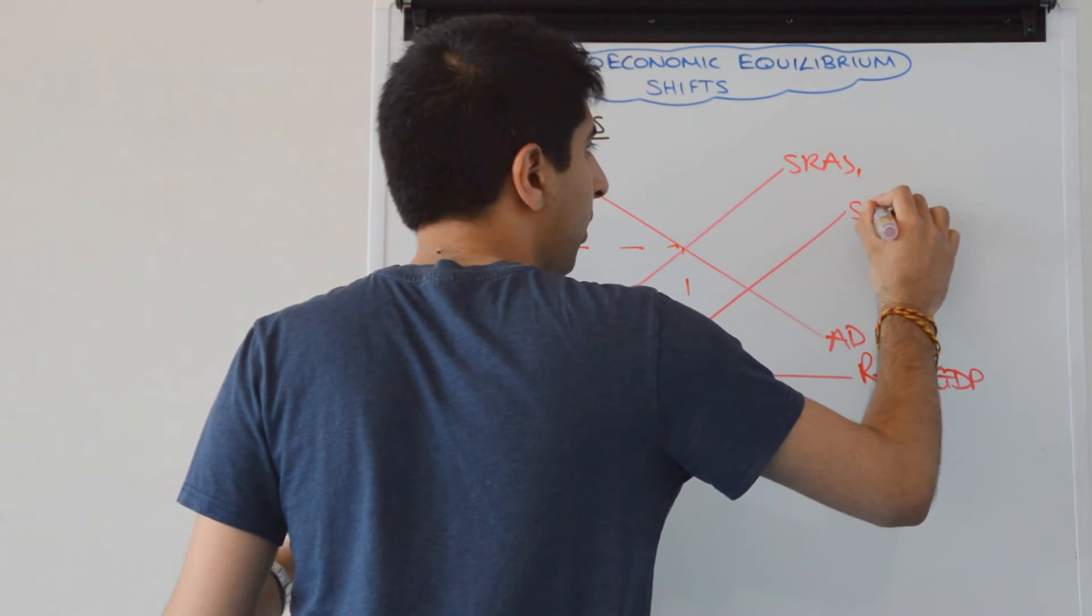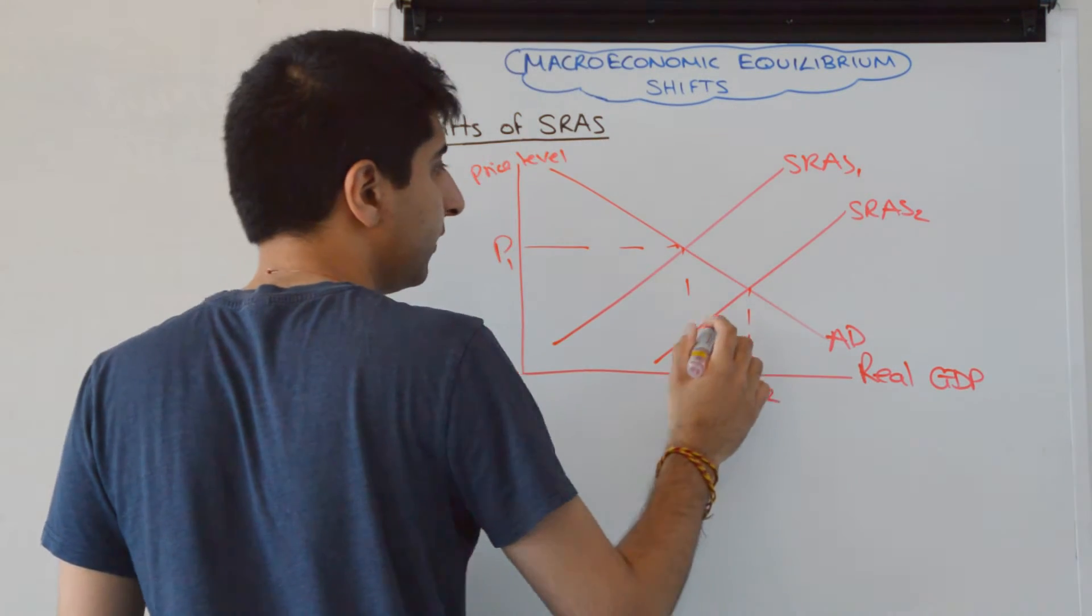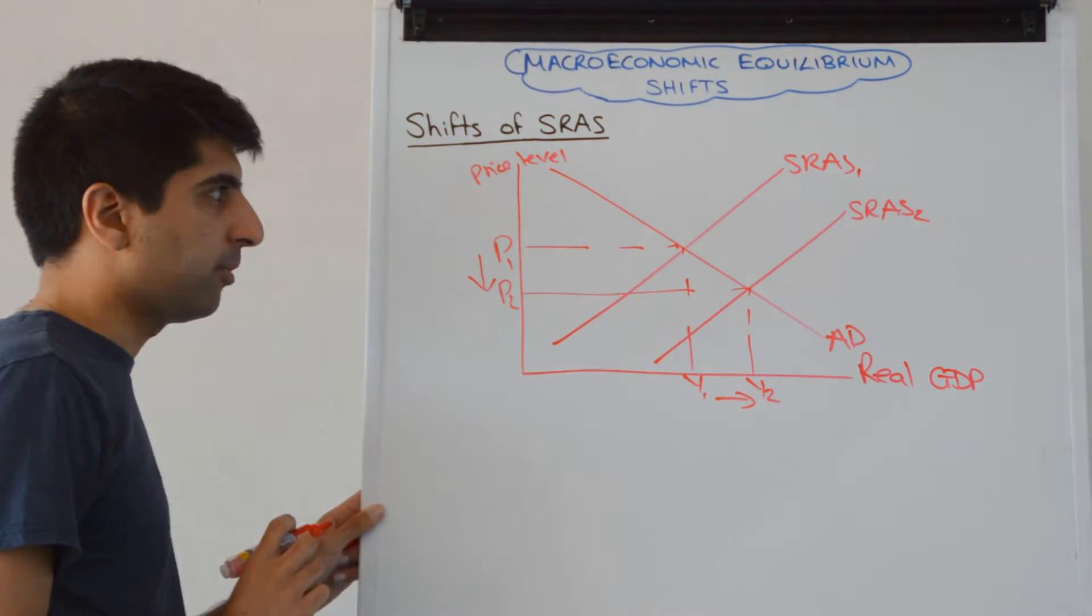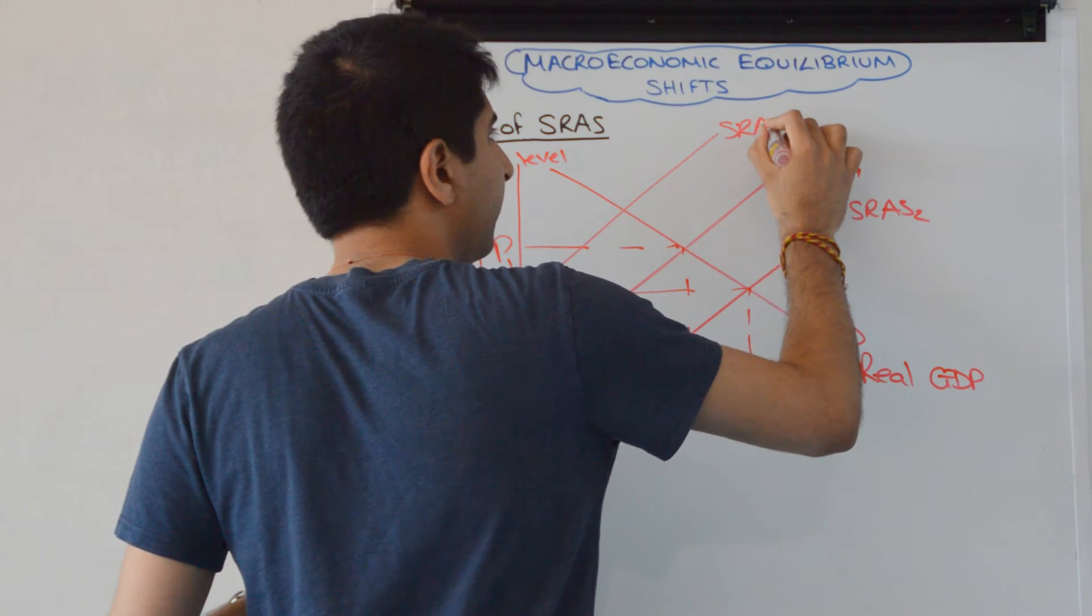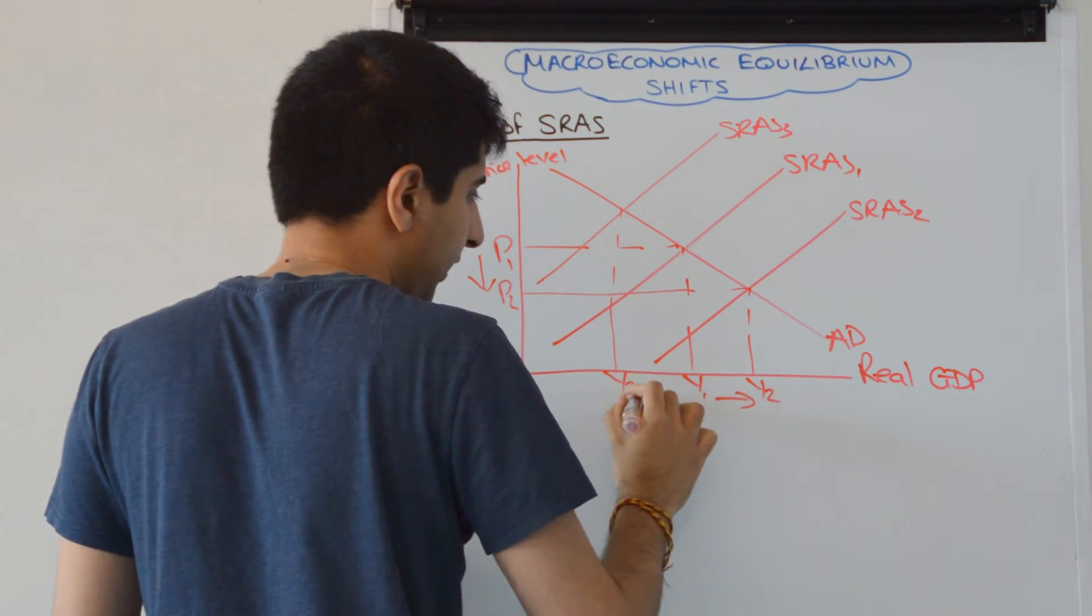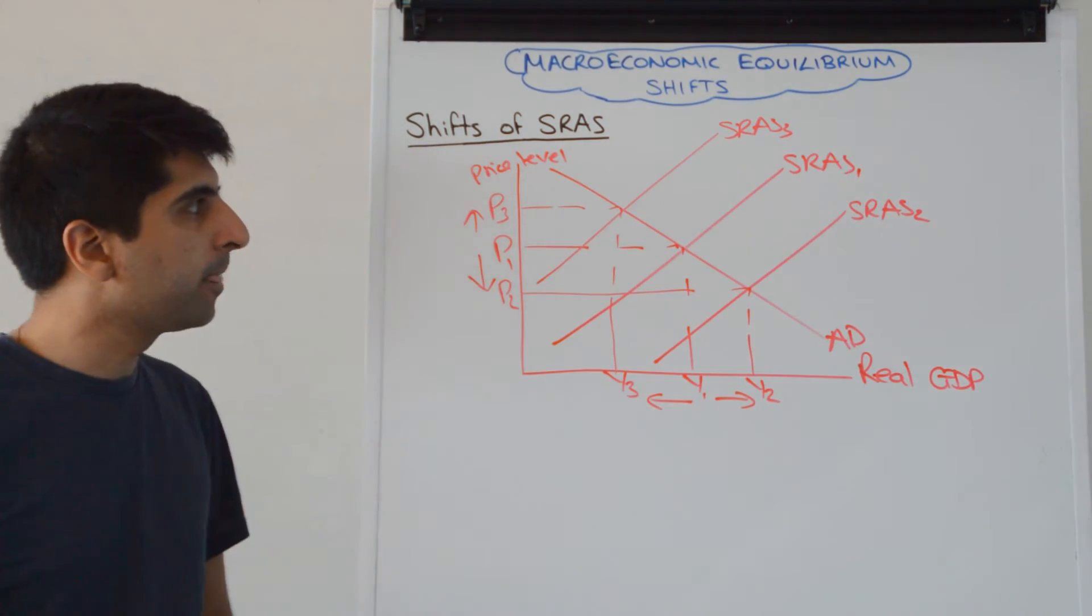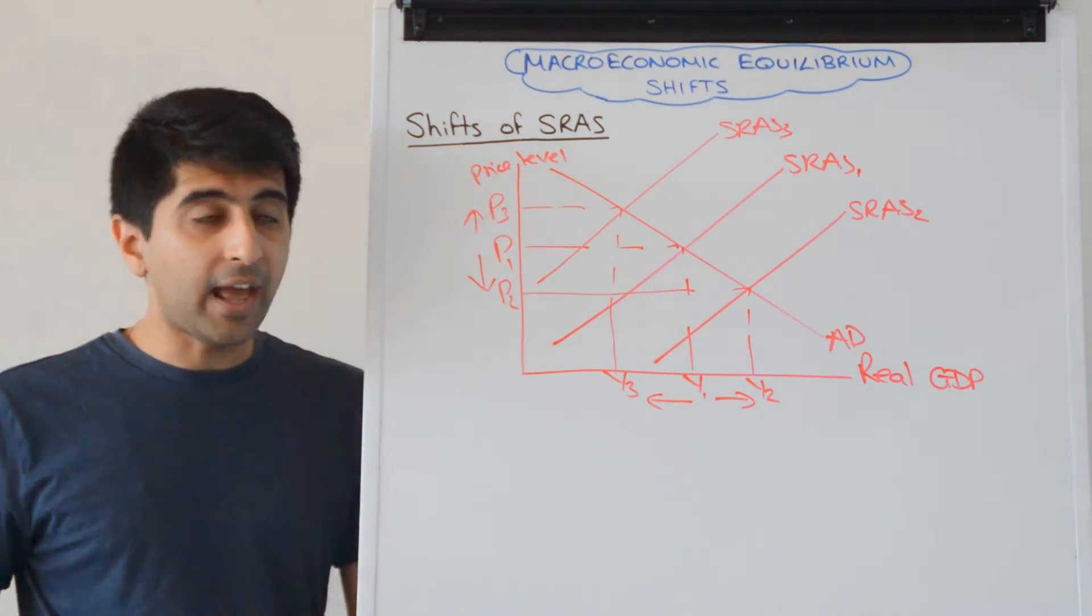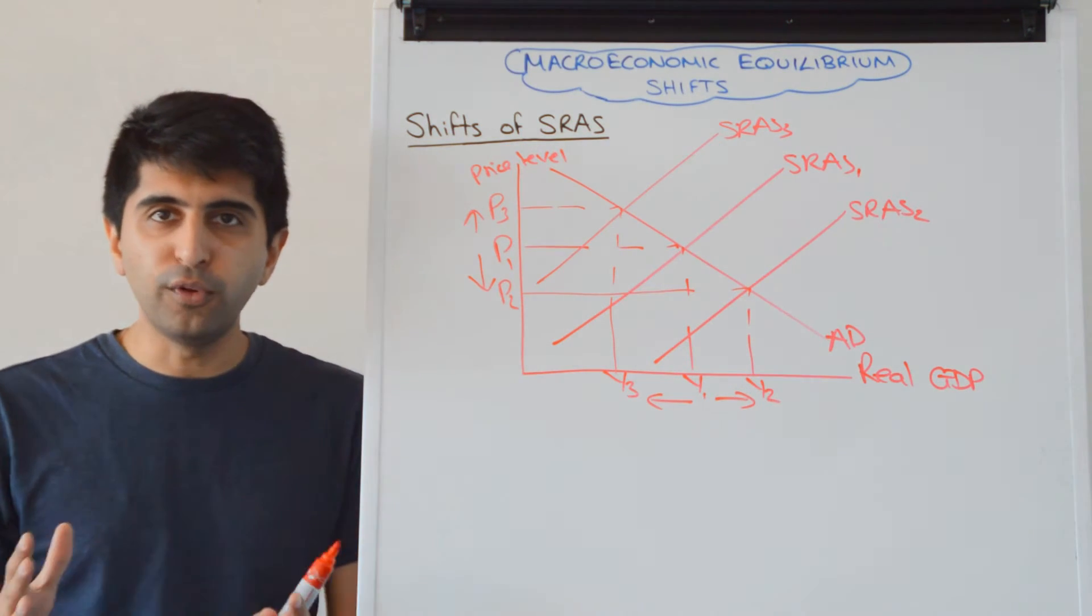So if you want to show a positive supply-side shock from SRAS1 to SRAS2 with an increase in economic growth and a reduction in cost-push inflationary pressure, or if you want to show a negative supply-side shock, then shift SRAS to the left. From SRAS1 to SRAS3, a decrease in economic growth and an increase in cost-push inflationary pressure, also known as stagflation, that phenomenon. So that's how you shift SRAS if there is a change in cost of production that affects all firms in the economy.